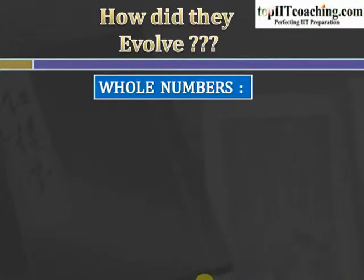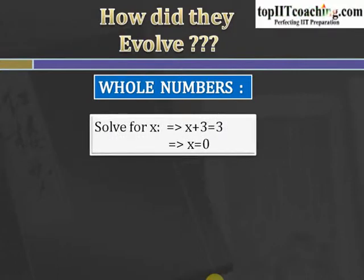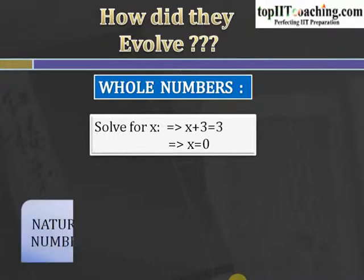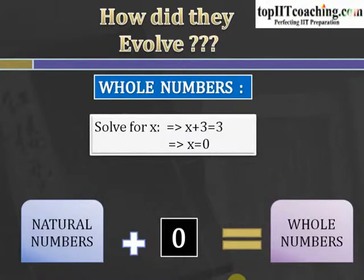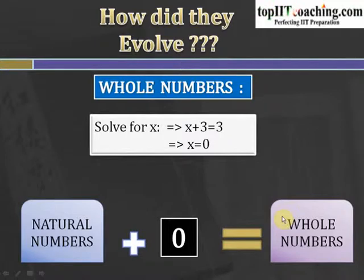Then came the whole numbers. If we have an equation x plus 3 equals 3, then the value of x is 0 — but 0 was not included in the system of natural numbers. So mathematicians created a new system and added 0 to the set of natural numbers. Natural numbers plus 0 equals the whole numbers, which is a set comprising all the natural numbers and also zero.